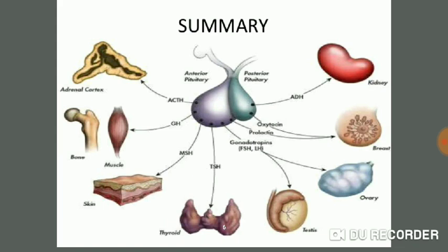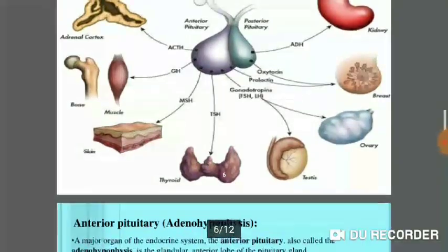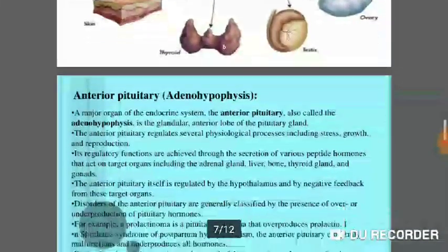Gonadotropins FSH and LH have effects on testes and ovaries. Oxytocin is released from the posterior pituitary (neurohypophysis), and prolactin from the adenohypophysis; both have functions on the breasts or mammary glands. ADH from the posterior pituitary regulates the water balance in the body, with the kidney as its target organ, maintaining water levels in the body.